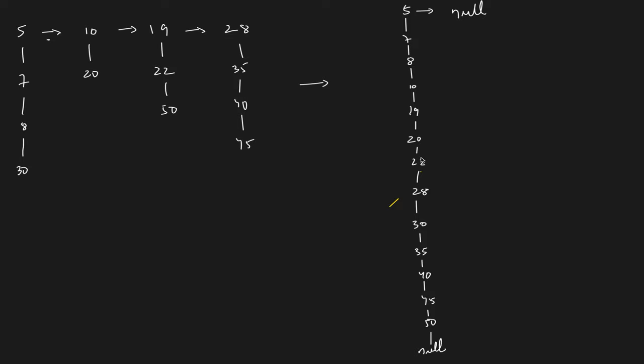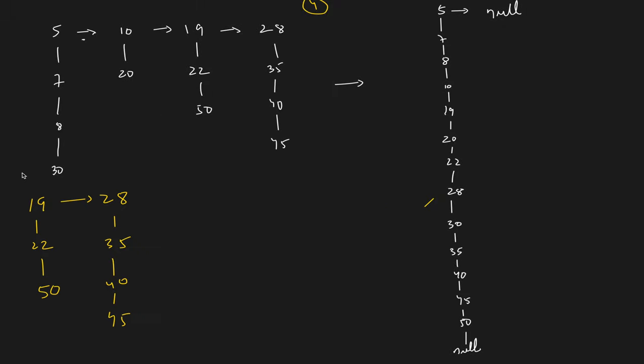The thought process behind solving this problem is to first understand how we can solve it if there are only 2 linked lists instead of n. If you had 2 linked lists, will it not be similar to merging 2 sorted linked lists into 1 sorted linked list? Yes — we are going to use the merge technique from merge sort.